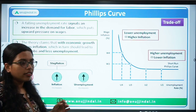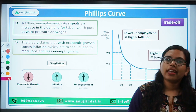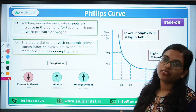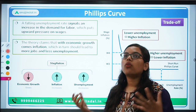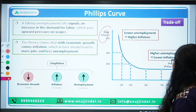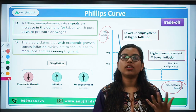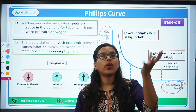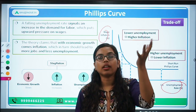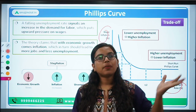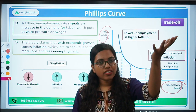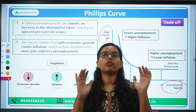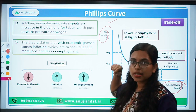Now let's talk about the Phillips curve, given by William Phillips. This was very famous until the 1970s. The Phillips curve talks about the trade-off between inflation and unemployment rate — there is an inverse relationship between the two. Whenever inflation increases in the economy, unemployment decreases, meaning there is an increase in employment. The lowest level of unemployment corresponds to the highest inflation level, and as unemployment increases, inflation decreases. But this is true only in the short run.